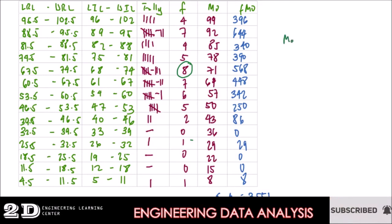Our mode class is 67.5 to 74.5. That is our mode class. Now, our mode in this one is not the class. Our mode is the midpoint of that mode class, this one. So our mode is 71.